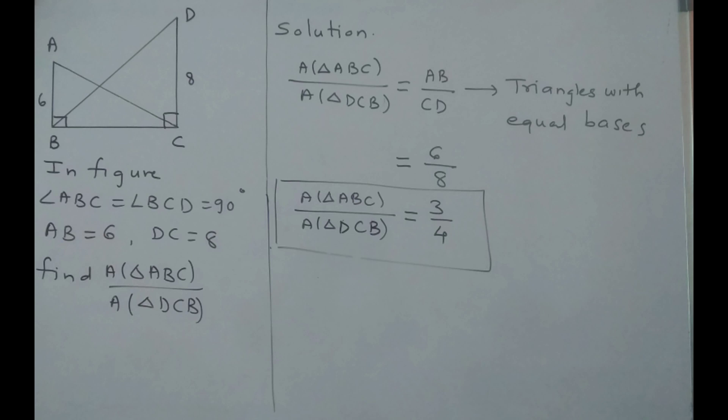Solution: area of triangle ABC upon area of triangle DCB is equal to AB upon CD. Reason: triangles with equal bases. We know that if triangles have equal bases, ratio of their areas is equal to ratio of their corresponding heights. Substituting the value: 6 upon 8, simplifying gives 3 upon 4. So area of triangle ABC upon area of triangle DCB is equal to 3 upon 4.